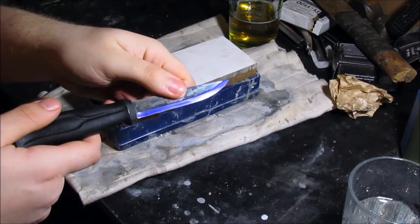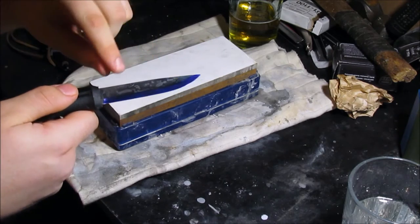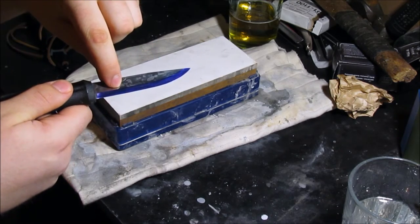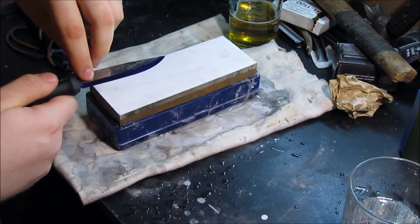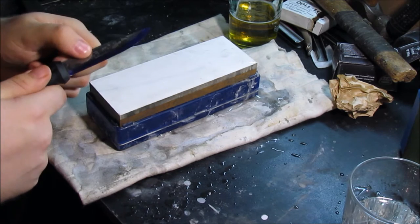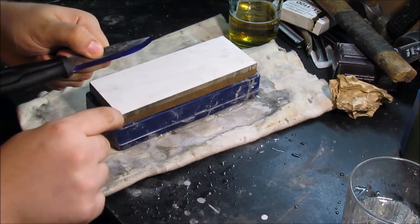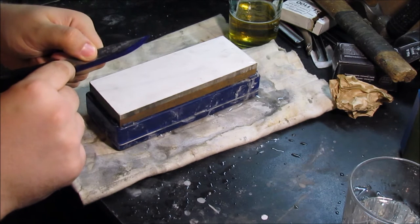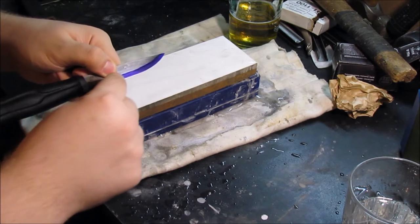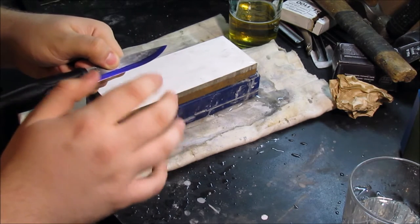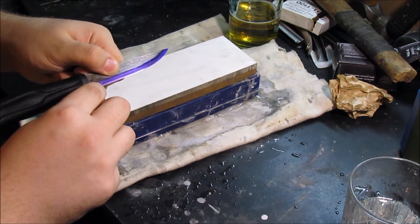So now I've got her all colored up, and the reason you do this is because you want to see where the stone is cutting. Now ideally you want the stone to cut the entire swatch of purple, but some of them, usually mine are a little hollow ground in the center of the primary bevel there. So what you basically want to do is make sure it's wearing at the top of the bevel and it's wearing on the edge down here.